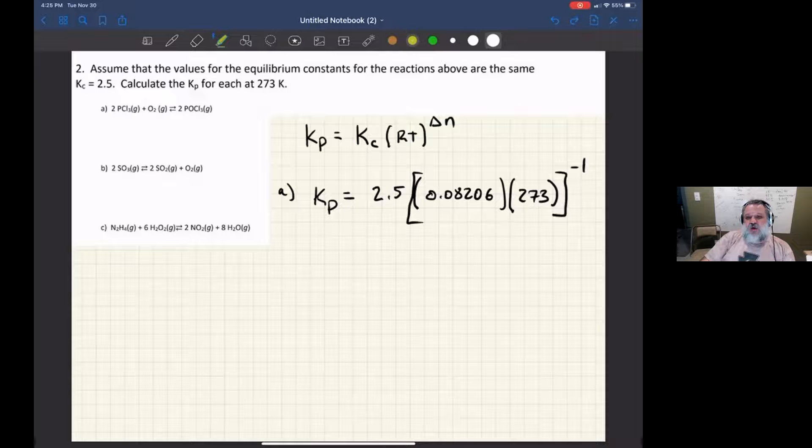Now, we're going to raise it to the power of negative 1. Now, why negative 1? In A, I had 2 moles of gas in the products minus 3 moles of gas in the reactants. That's where I came up with the negative 1. So when I run this through my calculator, I get 0.0179.